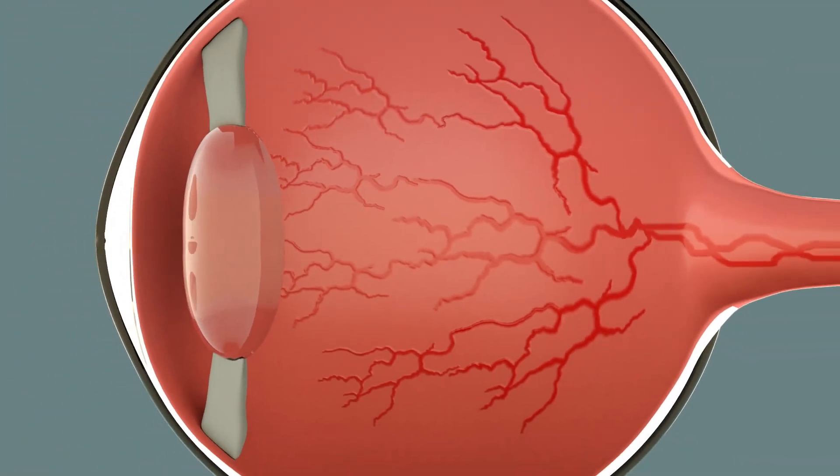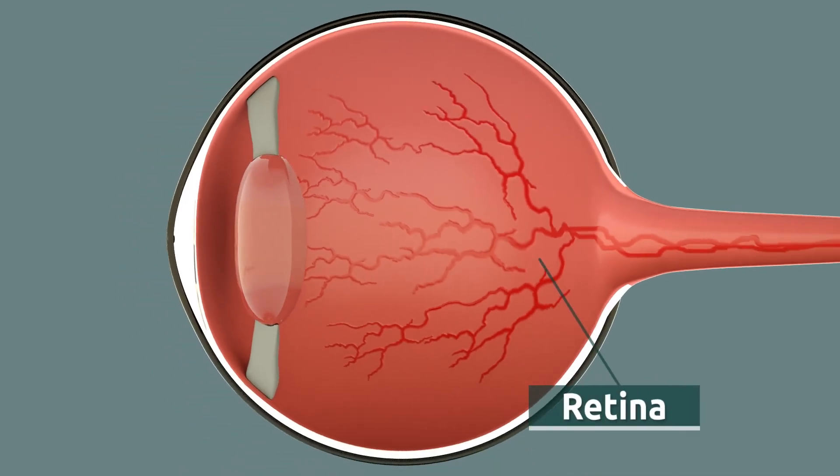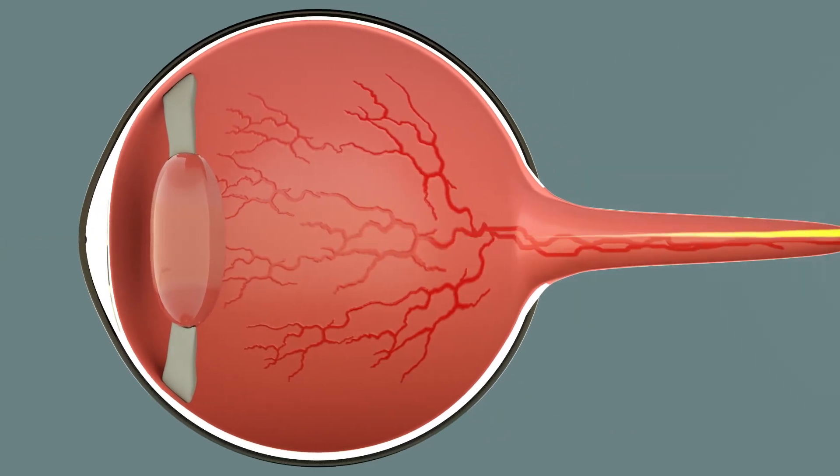The retina is located at the back of the eyeball and it's made up of millions of light-sensitive cells. The retina is in charge of receiving the light and transmitting this information to the brain through the optic nerve.